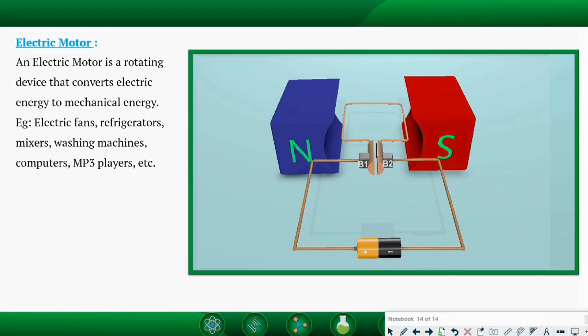The main components of electric motor are strong permanent magnets, coil A, B, C, D, two fixed carbon brushes B1 and B2, and split ring P and Q. Rings P and Q are also known as commutators.